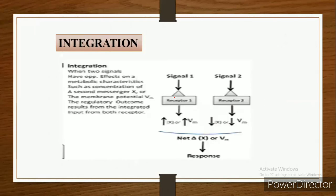This is about desensitization. Next one is integration. Integration is the ability of a system to receive multiple signals and produce a unified response appropriate to the combined needs of the cell or organism. See here, signal one and signal two. These two signals bind to the receptors and show opposite effects on metabolic characteristics like concentration of second messenger and membrane potential.